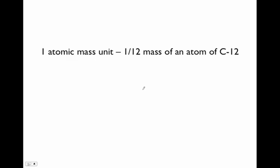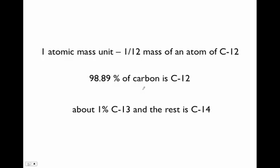We define one atomic mass unit as one-twelfth of the mass of carbon-12. Since almost 99% of carbon is carbon-12 and about 1% is carbon-13, with a very small amount being carbon-14, the atomic mass, the weighted average of those isotopes, is a little over 12.